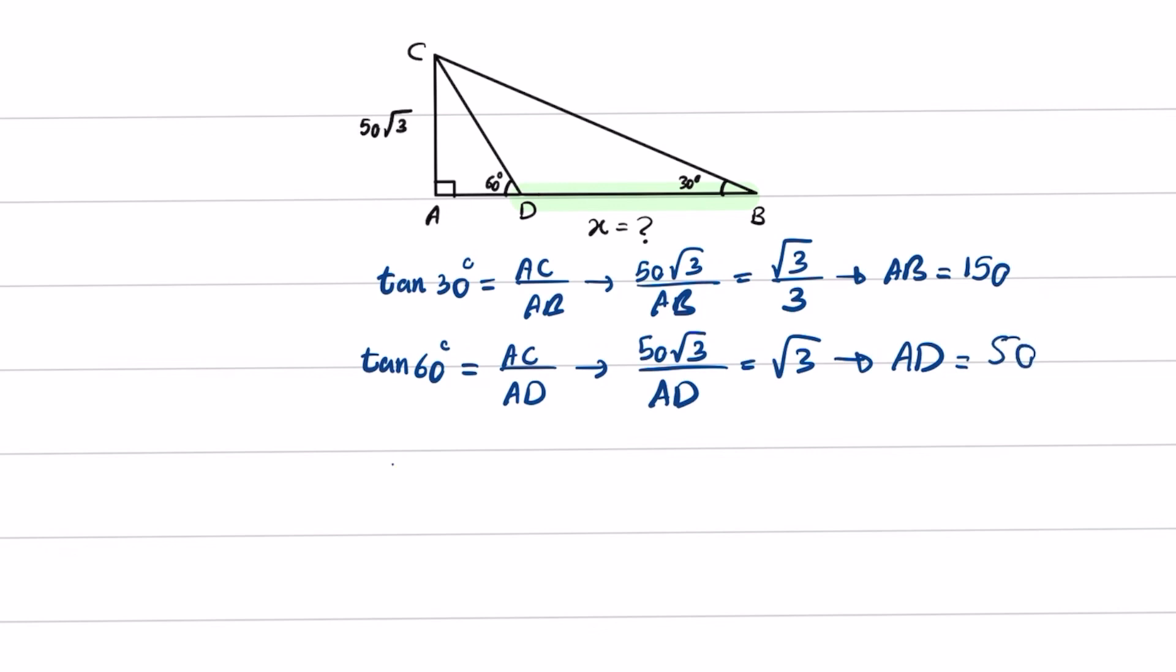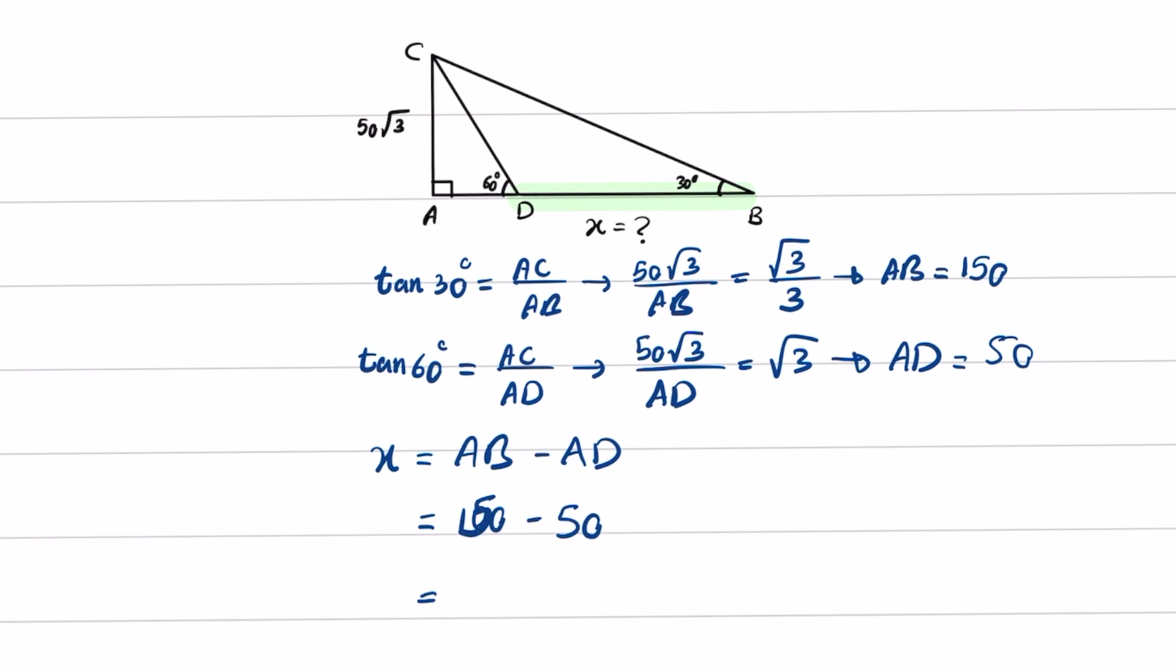Now we want to find X. X is equal to AB minus AD. We obtained AB as 150 and we know that AD is 50, so X is equal to 150 minus 50, which equals 100. This is the end of this video.